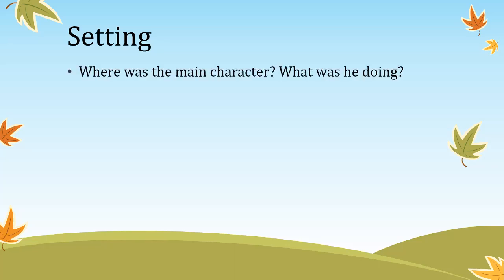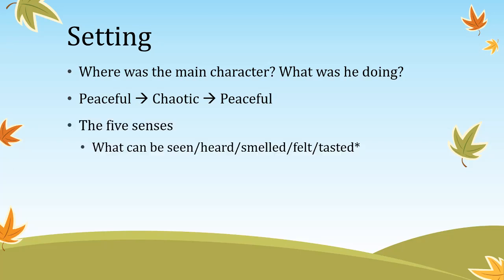The setting component is about the environment — where is the problem taking place, what was the main character doing? Change the setting like a movie: first very peaceful, then suddenly very chaotic with many problems, then towards the end become peaceful again. To describe the setting, use the five senses: what can be seen, heard, smelled, felt, and tasted — though tasted should only be used when relevant to eating or drinking.